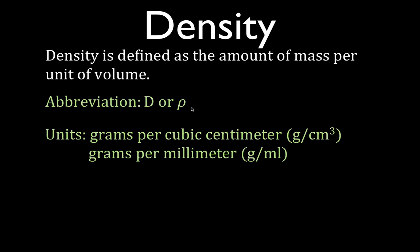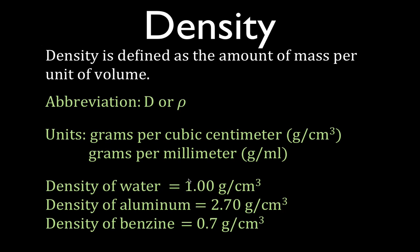The units for density — the base units — are kilograms per cubic meter, but usually in class we measure density in grams per cubic centimeter or grams per milliliter. The density of water is one gram per cubic centimeter. Some materials have a higher density than water, like aluminum at 2.70 grams per cubic centimeter. And some materials have a lower density, like benzene at 0.7 grams per cubic centimeter.